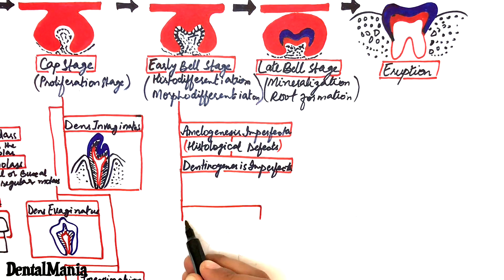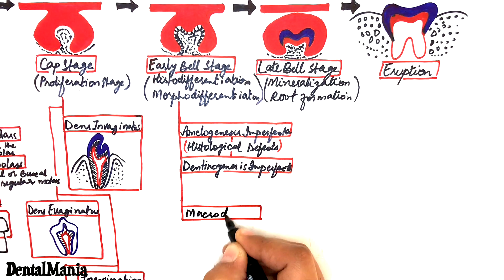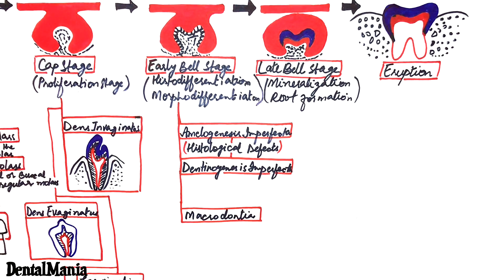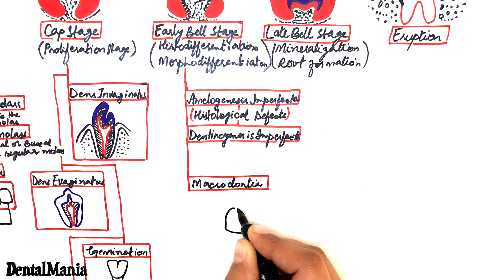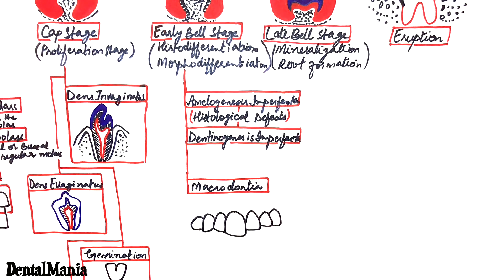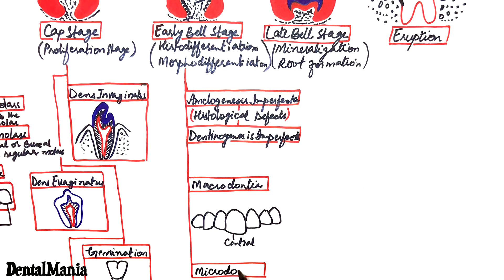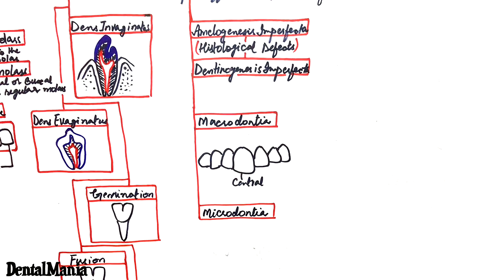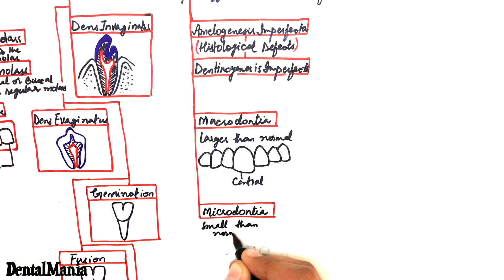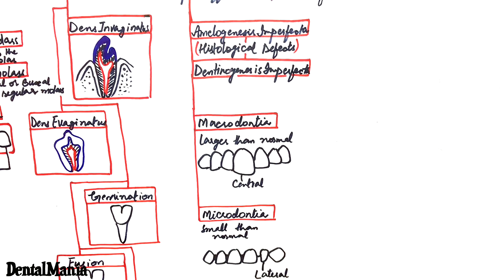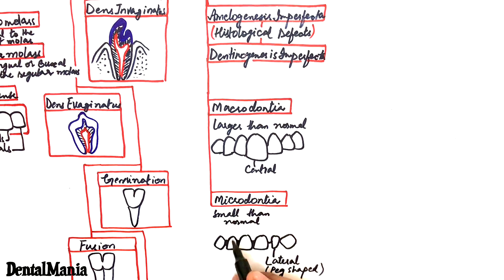Defects in morphodifferentiation cause abnormalities in size or shape of the tooth. The tooth may be larger than normal in size called macrodontia shown in this maxillary central incisor or smaller than normal in size called microdontia. Maxillary lateral incisors are the most frequently involved teeth which is also called peg-shaped lateral incisor.